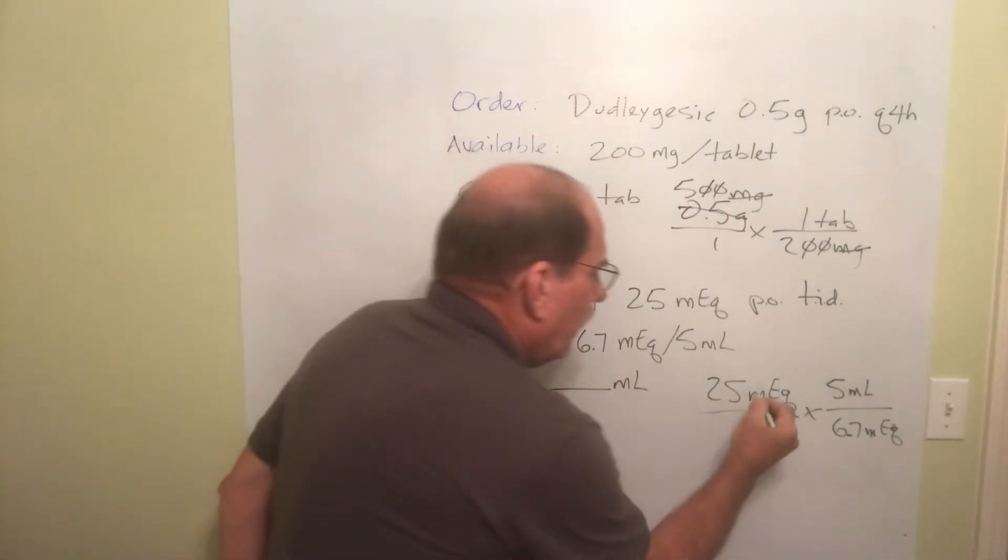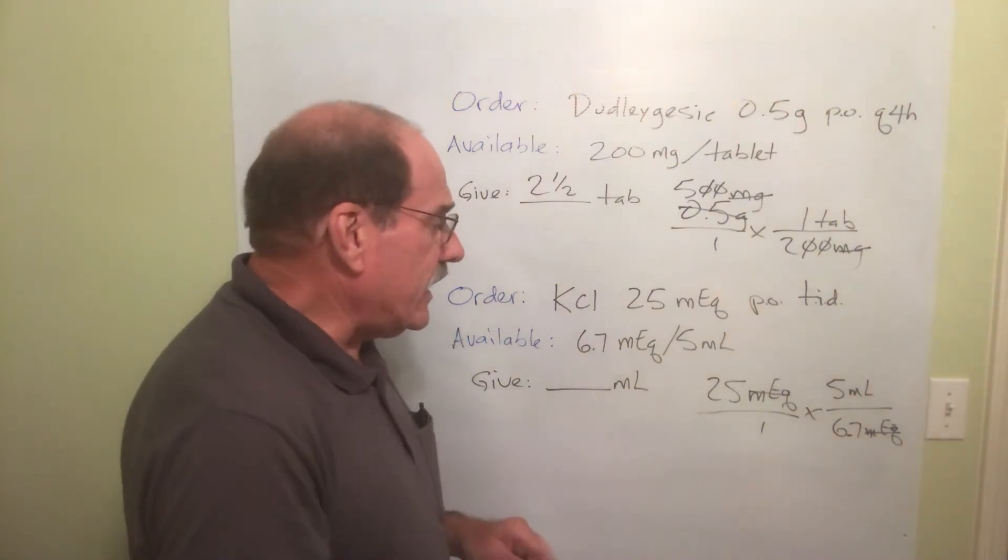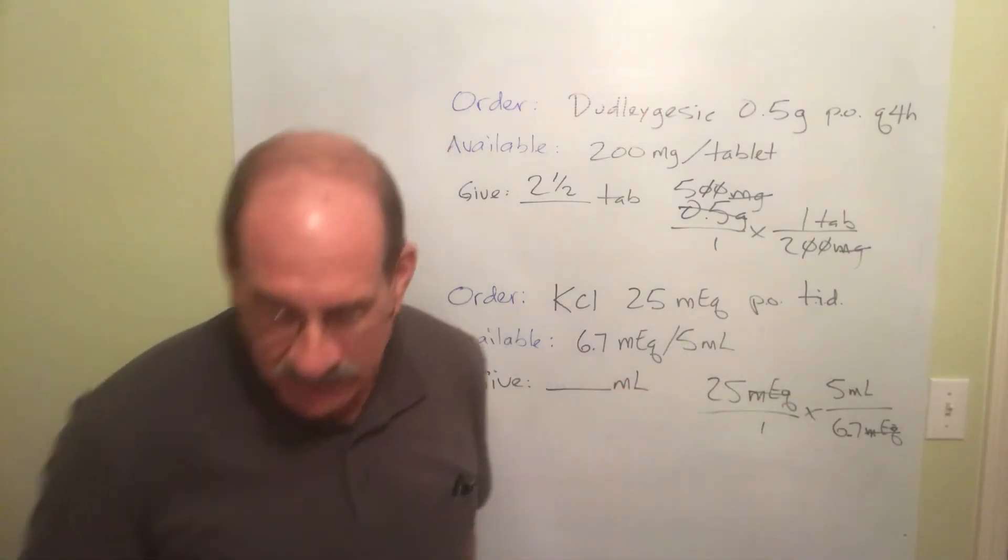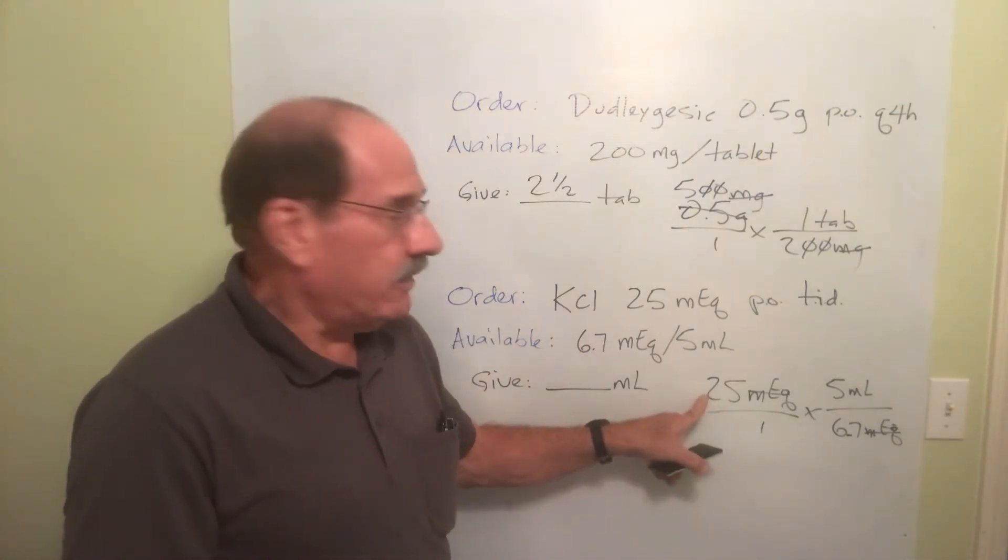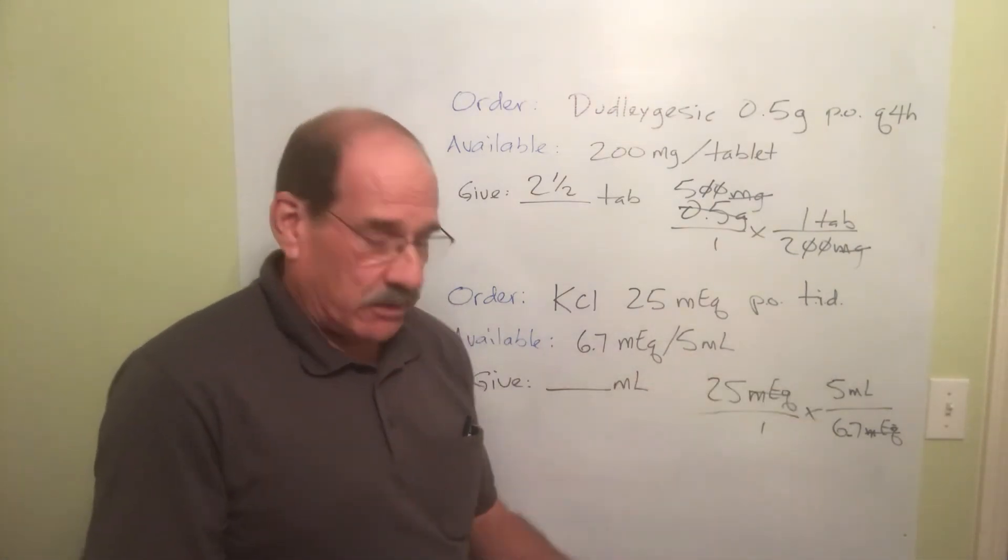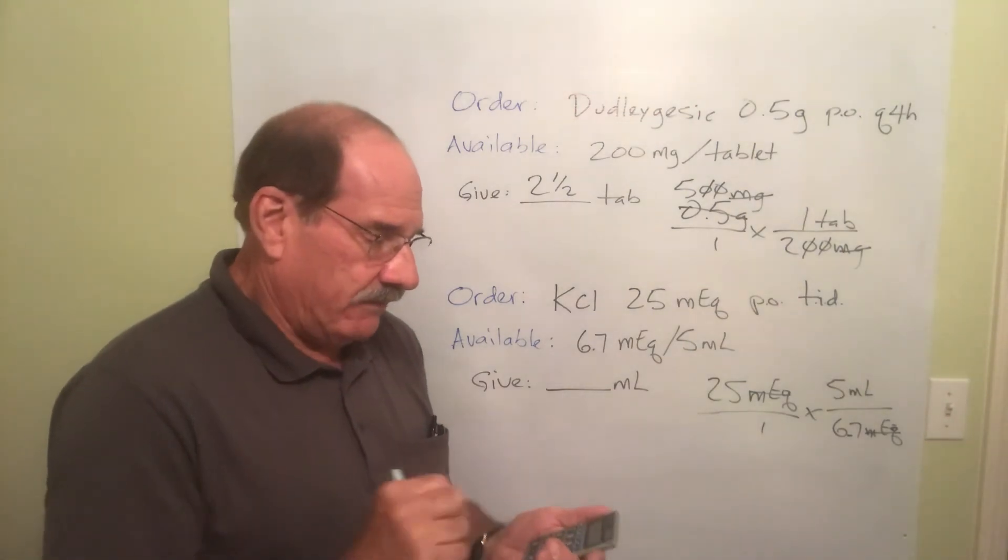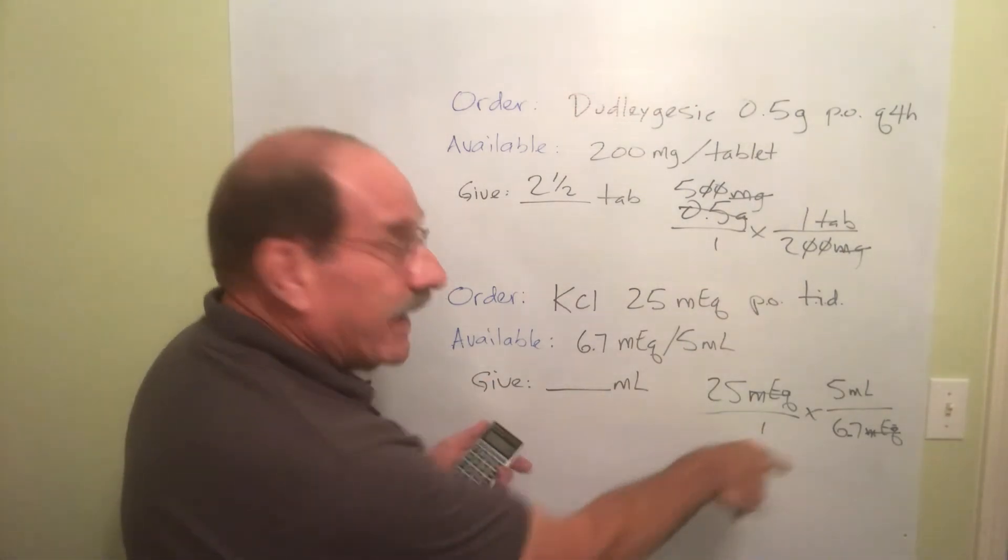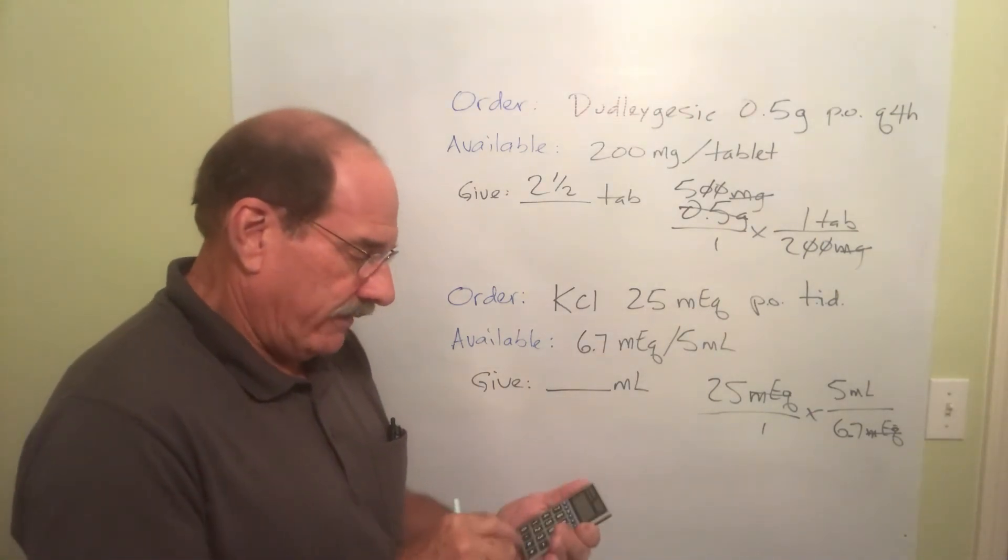Well our milliequivalents will cancel. And since there are three non-zero numbers, here we go again. The two top numbers. 25 multiplied by 5. 25 times 5 equals that. Then we divide it by the bottom number. Divided by 6.7.